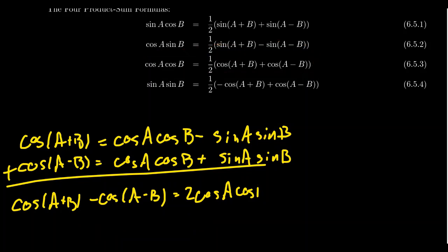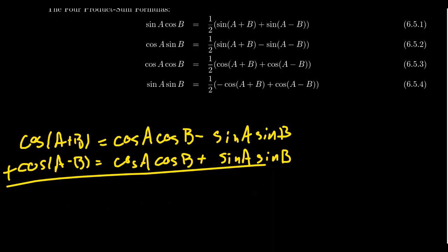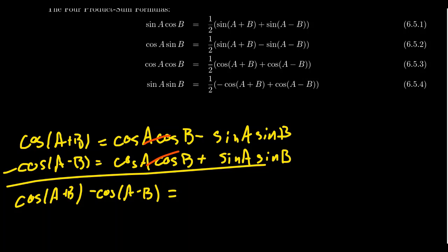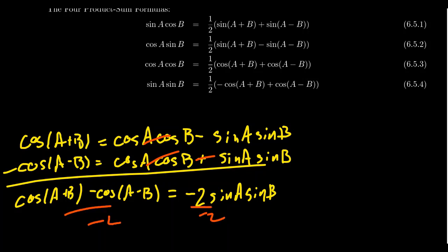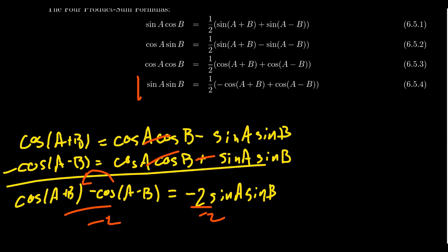Now subtracting instead: cosine(A+B) minus cosine(A−B). This time the cosines cancel out, and the sines — because we're subtracting — give a negative, resulting in negative 2 sine A sine B. Dividing both sides by negative 2 yields: sine A times sine B equals one-half times [cosine(A−B) minus cosine(A+B)]. So we now have all four product-to-sum identities, all consequences of combining the angle sum and angle difference identities for sine and cosine.